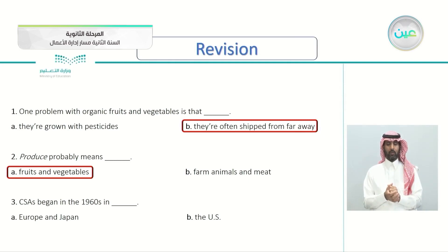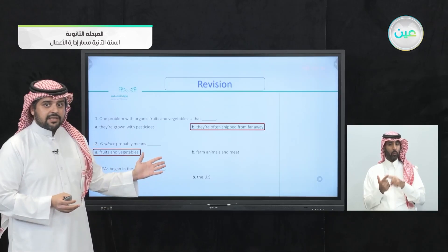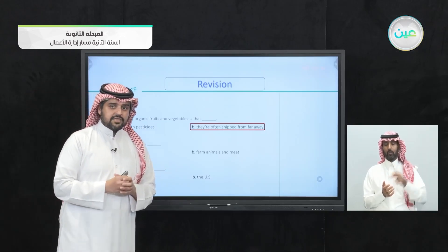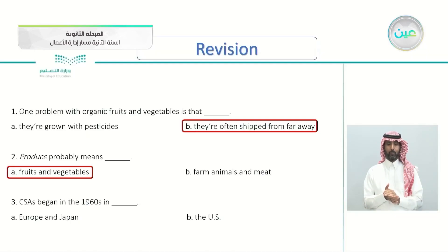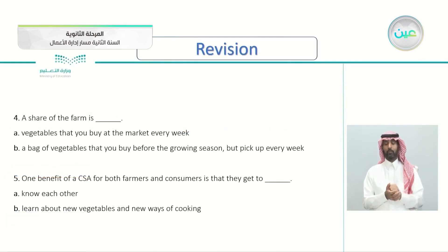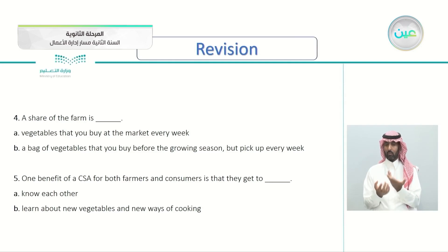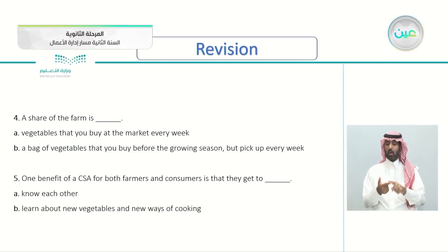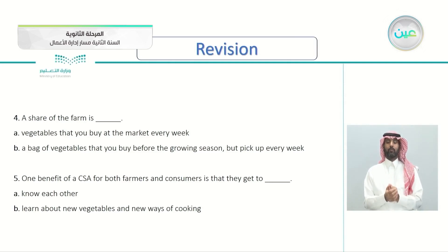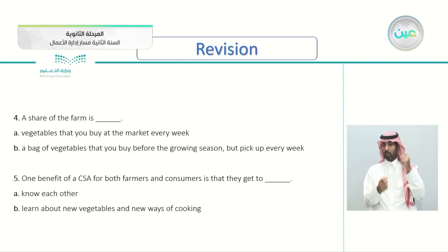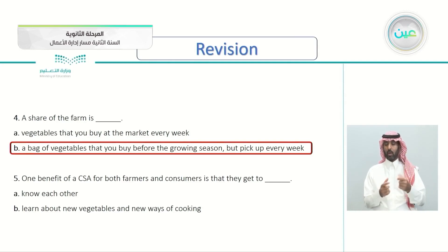The correct answer is A — Europe and Japan. Question four: a share of the farm is — A: vegetables that you buy at the market every week, or B: a bag of vegetables that you buy before the growing season but pick up every week. The correct answer is B — it's a bag of vegetables that you buy before the growing season and then pick up every week.